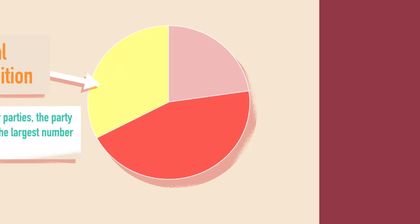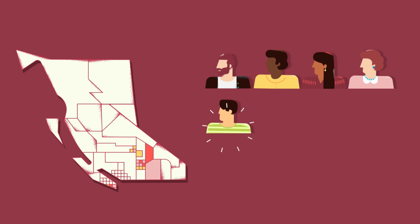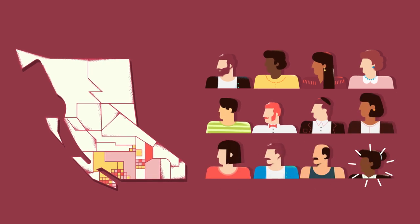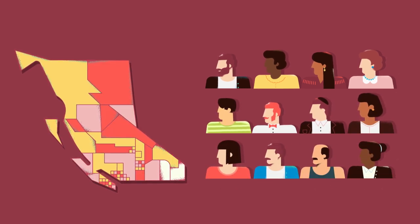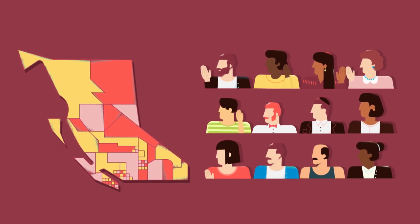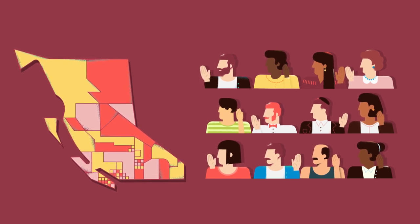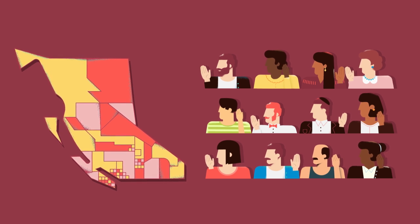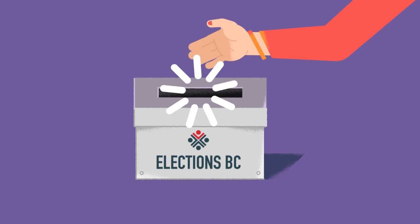By now, you should have a pretty good idea of how parliamentary democracy works in BC. What's important to remember is that it all starts with you, the voter. Each vote counts, and each district matters in the makeup of the future government, which is why participating in elections is so important.